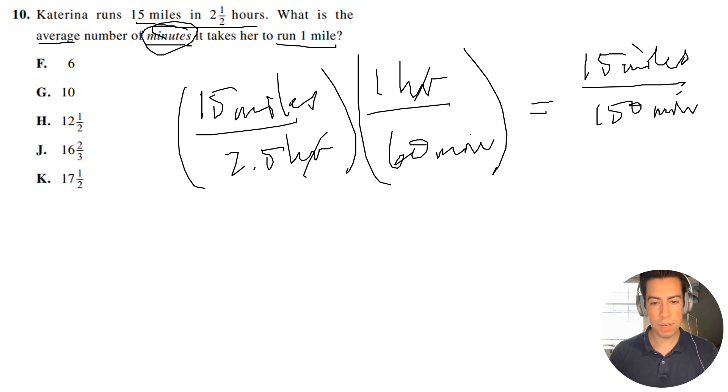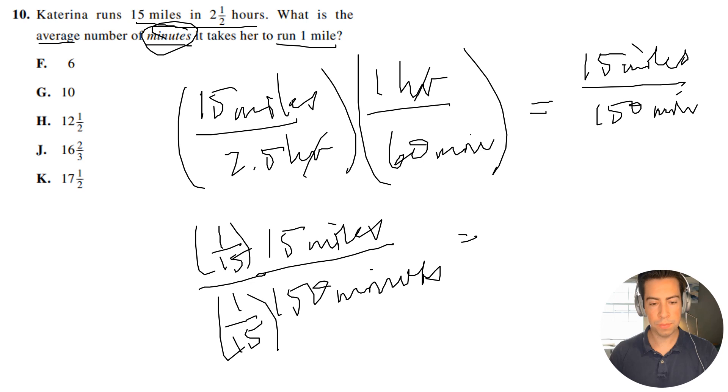Now I need 1 to be on top, so it's going to be 15 miles per 150 minutes. I'll simplify both of these by multiplying by 1 over 15 on top and bottom, and I get 1 mile per 10 minutes.